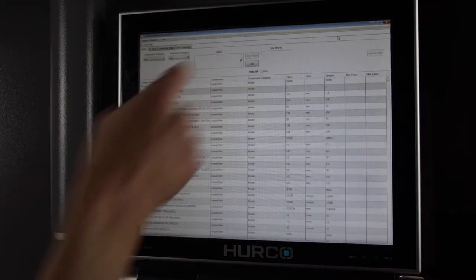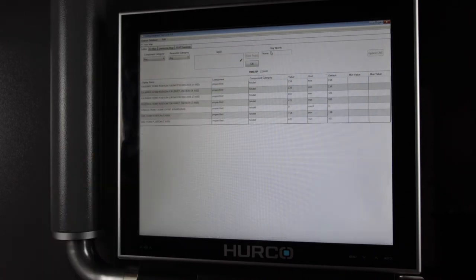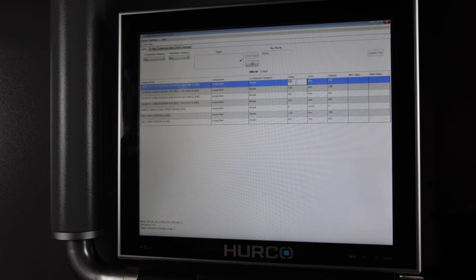Once the config editor has launched, in the keywords bar, search for home. In the list you should see a line for calibrate home position for motor encoder x-axis. In the value column, subtract the number you recorded earlier from the current value.